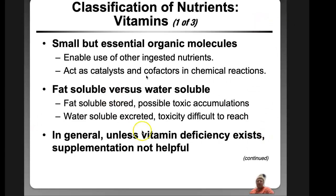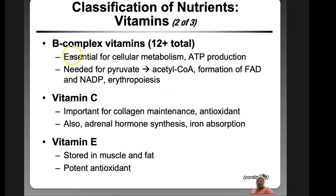Too much vitamin K can cause your blood to thicken. Vitamin D is one we critically need, and it comes from sunlight — in places like the Pacific Northwest where it's cloudy 250 days a year, people may need a vitamin D lamp. Vitamin B complex helps with ATP production and acetylcholine. Vitamin C is also important for collagen maintenance and iron absorption — a doctor actually advised my wife, who has iron deficiency, to take more vitamin C so her body absorbs more iron.